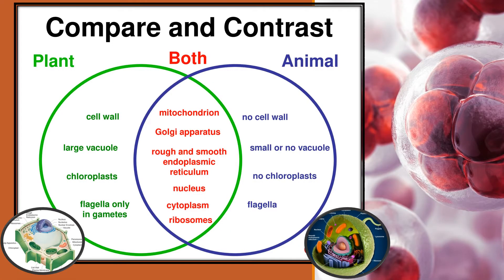Comparing and contrasting plant cells and animal cells: Plant cells have a cell wall, have a large vacuole, have chloroplasts, and flagella only in gametes. While animal cells have no cell wall, small vacuole, no chloroplasts, and do have flagella. Both plant cells and animal cells share mitochondria, Golgi apparatus, rough and smooth endoplasmic reticulum, nucleus, cytoplasm, and ribosomes.